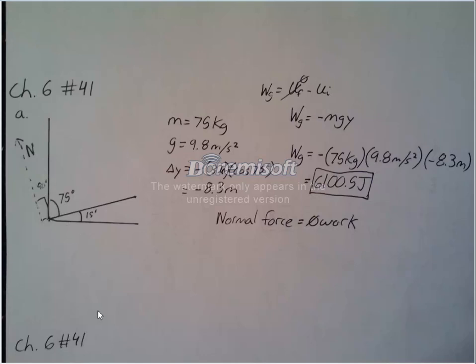So using WG equals UF minus UI, UF would be equal to 0. WG, we know the equation for U would be MGY, so it would be negative MGY. It gives us mass, 75 kilograms, and gravity, we know gravity. And in order to find delta Y, we have to use the cosine of this line right here, 32 meters, and we get negative 8.3. So we plug all this stuff in, and we'll get the work done by gravity.